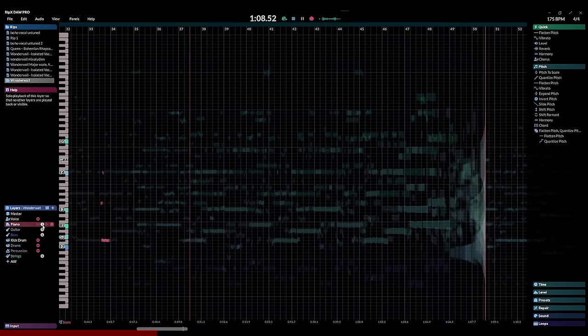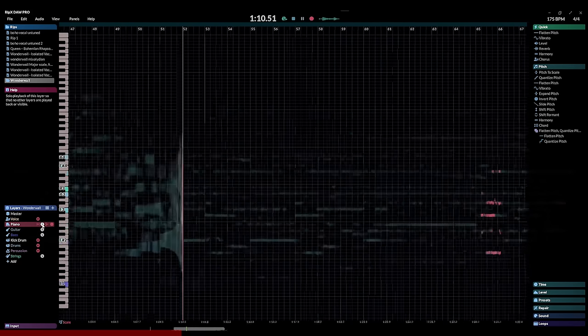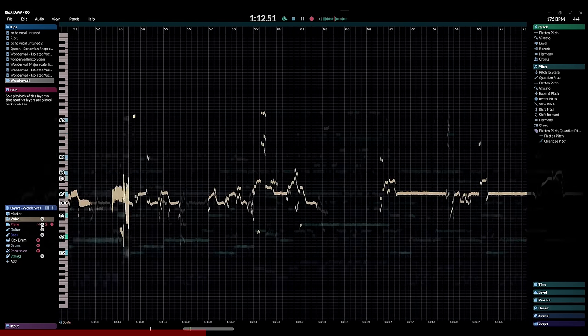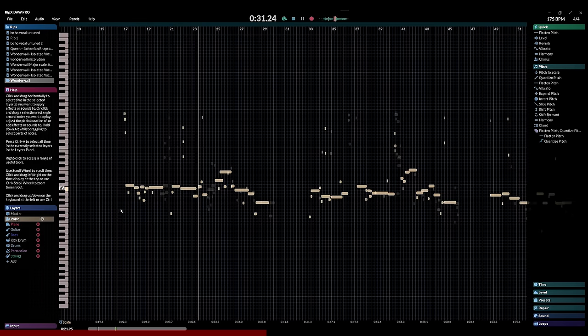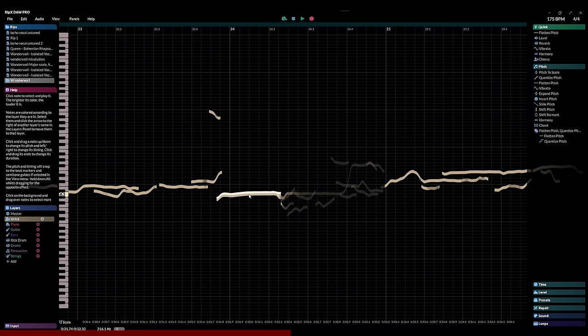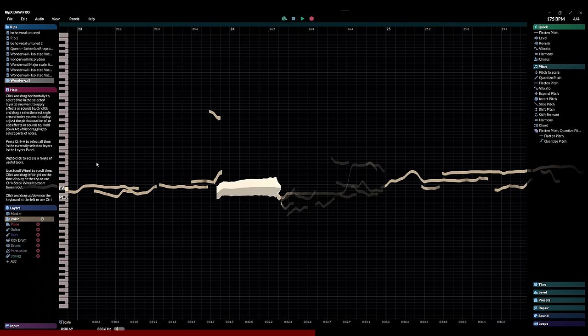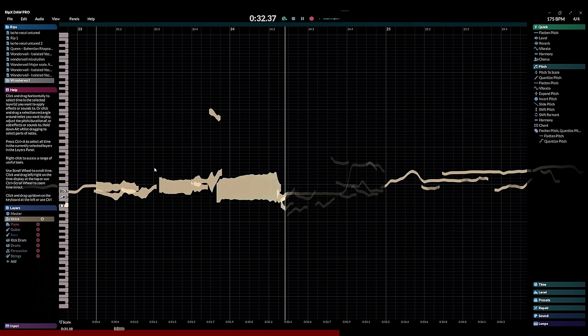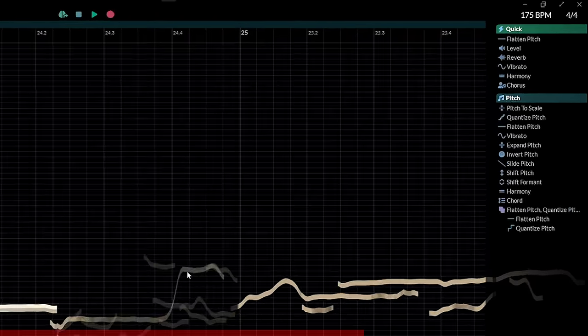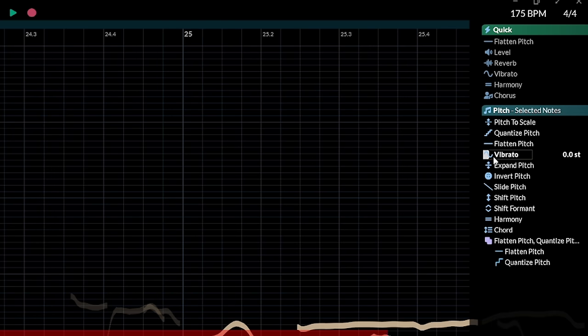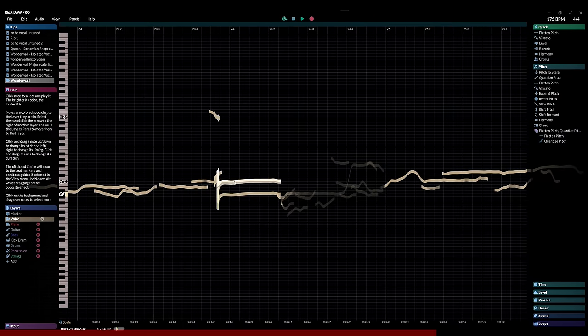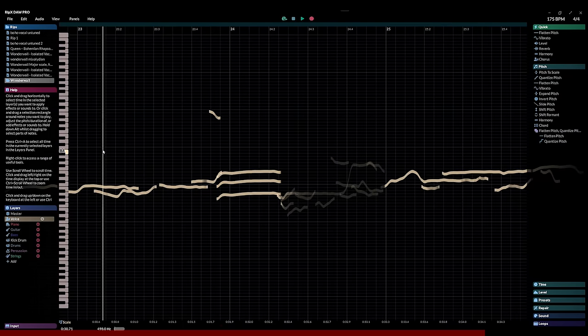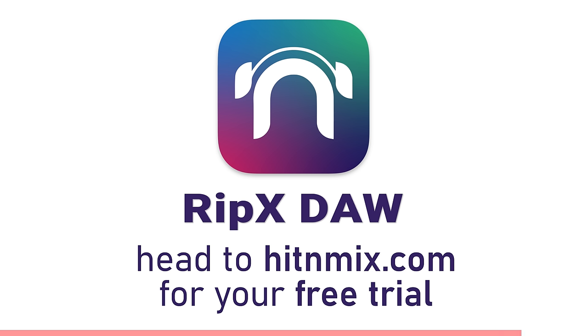but then once you've done that you can then freely modify the notes in each of those parts. You could also auto-tune them if you want to. You can stretch them out, you can shorten them, you can add vibrato. You could create harmonies from one existing vocal line. You can really do so much with this piece of software. So I highly recommend you check it out. You can do so with a free trial using the link down below in the description.